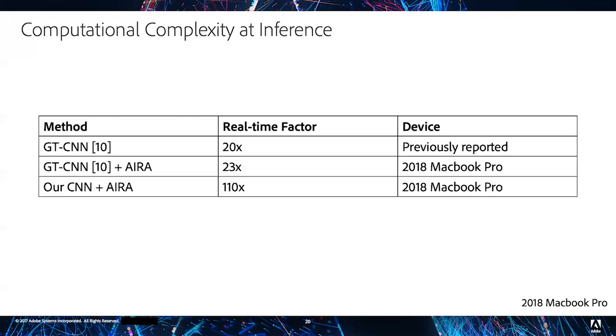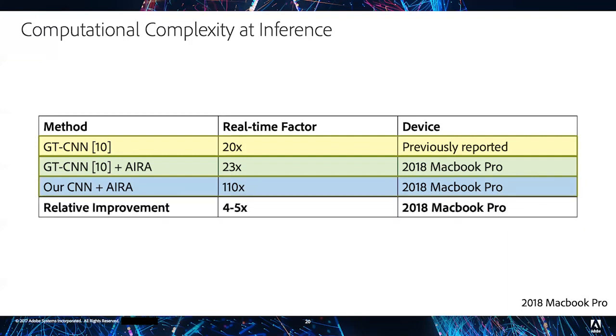In terms of computational complexity at inference time, if we look at previously published results in yellow, the GT-CNN method is roughly a real-time factor of 20x. Our re-implemented method is a rough real-time factor of 23x. And using our CNN, we can achieve a real-time factor of roughly 110x. This achieves a relative improvement between four to five times faster than previous state-of-the-art.